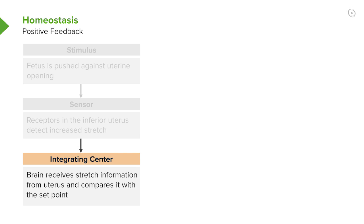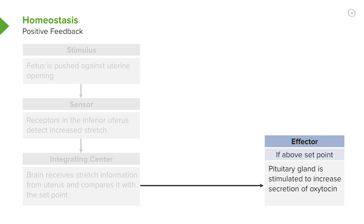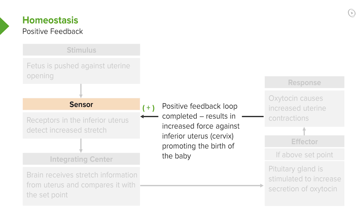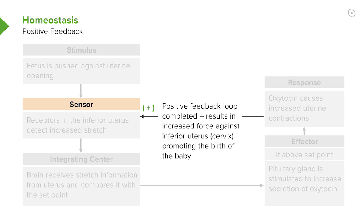And the hypothalamus will then say, well, we need to have a secretion of oxytocin in order to have contractions so that we can expel the baby. So, that secretion of oxytocin is then detected by the sensor. More contractions happen, which stimulates more oxytocin, so on and so forth, until we have so much oxytocin present that the baby is expelled, and it's the expulsion of the baby that actually shuts down this positive feedback loop.